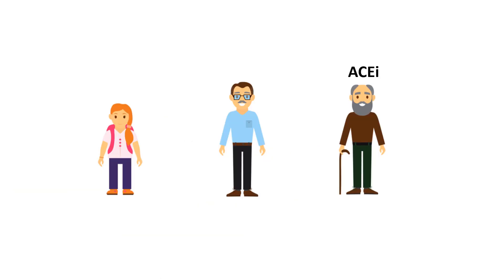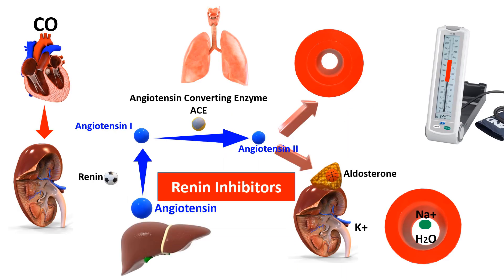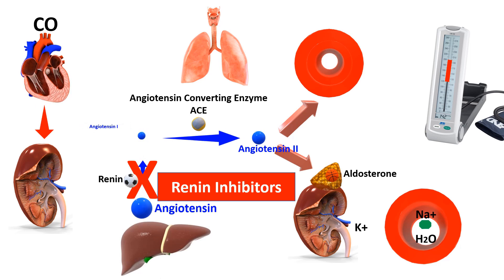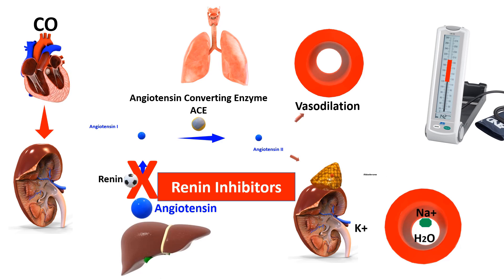In chronological order, the oldest generation is ACE inhibitors, then angiotensin receptor blockers, and finally the new generation — renin inhibitors, such as aliskiren. Renin inhibitors interfere with the action of renin enzymes, thus inhibiting the production of angiotensin 1 and angiotensin 2. As expected, decreased angiotensin 2 levels lead to vasodilation and suppression of aldosterone secretion, which results in increased sodium and water excretion.